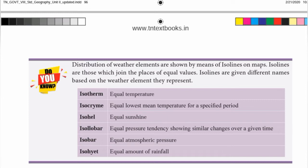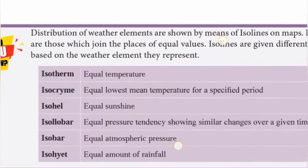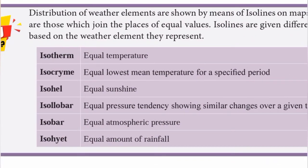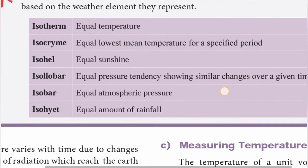Isotherm represents equal temperature. Isocrime is equal lowest mean temperature for a specified period. Iso helio is equal sunshine. Isobar is equal pressure tendency, showing similar changes over a given time.